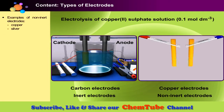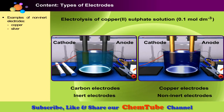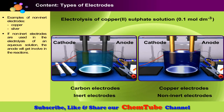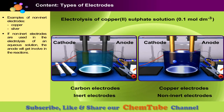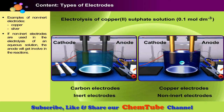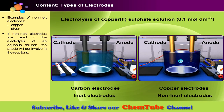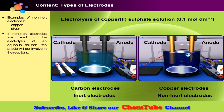If non-inert electrodes are used, the anode will get involved in the reactions. A non-inert electrode like copper will dissolve as ions and release electrons to the outer circuit. As a result, the non-inert electrode becomes thinner. At the cathode, for both inert and non-inert electrodes, the same ions are selectively discharged — that is, copper ions — and the selection is based on the position of ions in the electrochemical series.